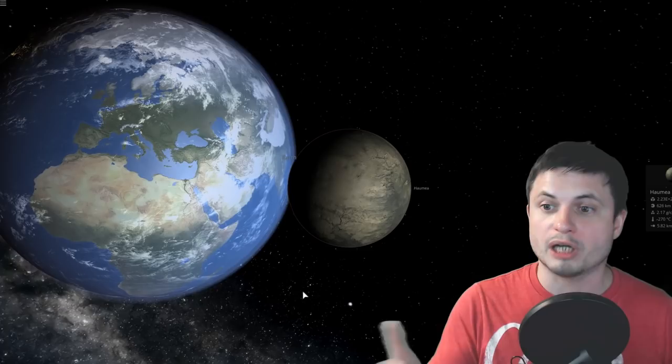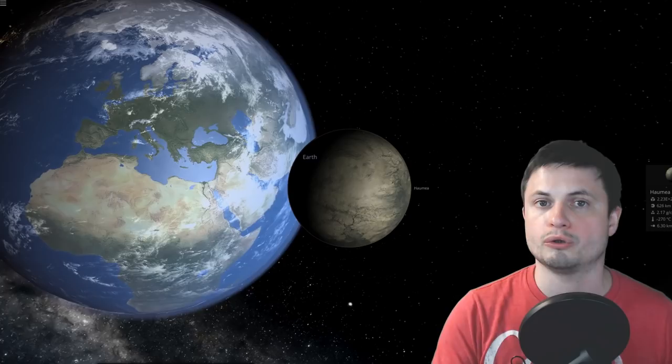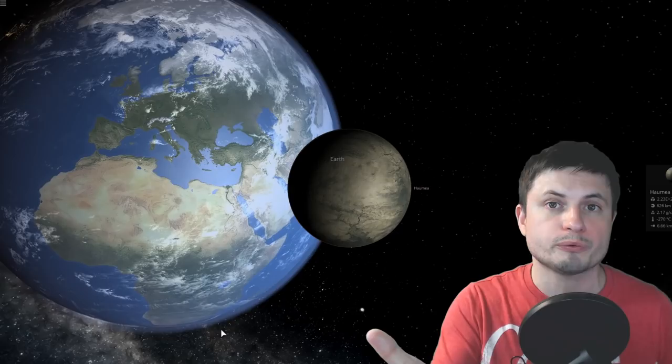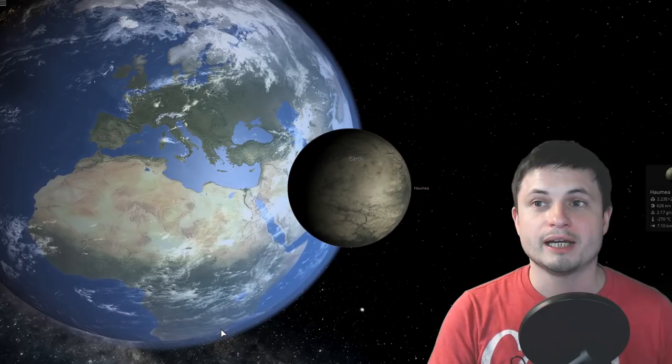Such as, for example, Haumea right here or maybe some kind of a large asteroid that we've detected, I don't know, like a year or two prior to the collision. What are we going to do? What's your first reaction? What is your first solution?